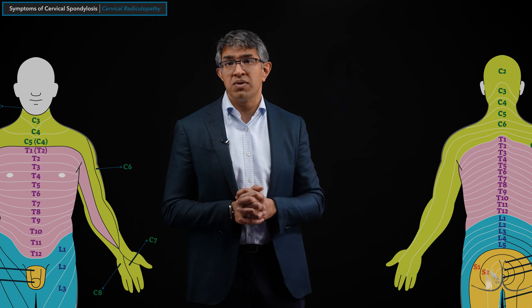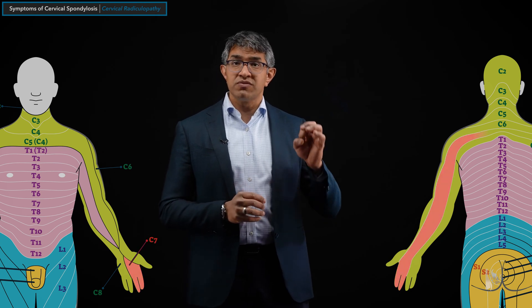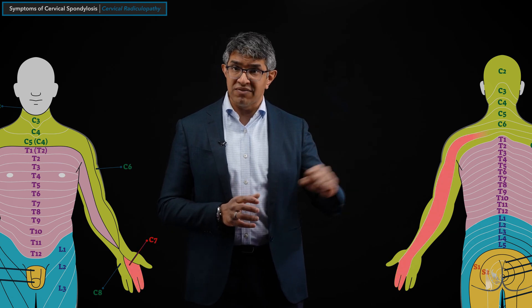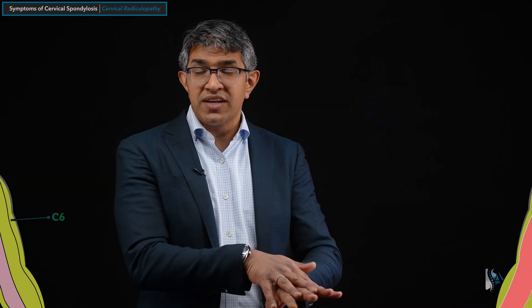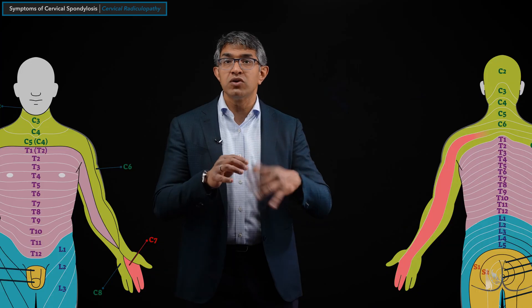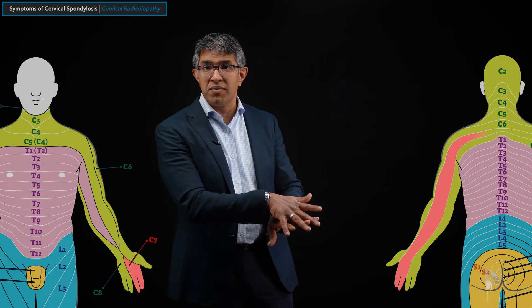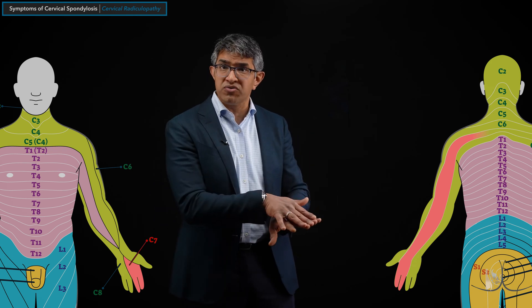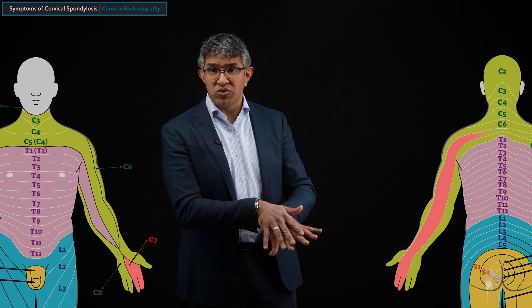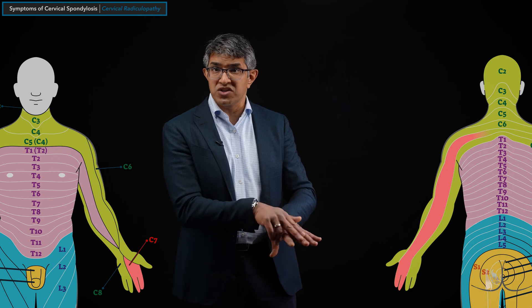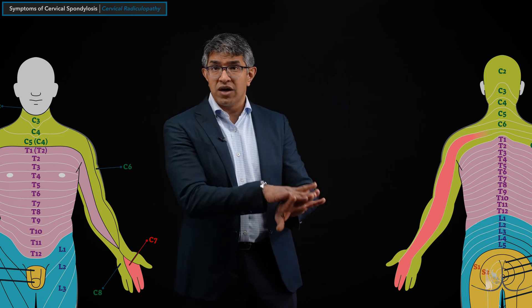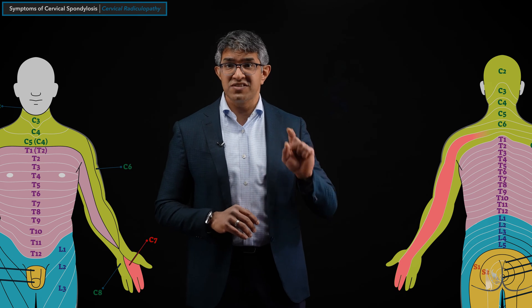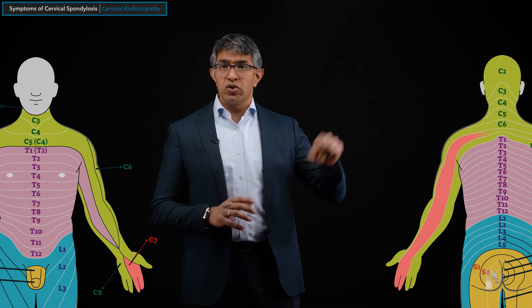A C7 radiculopathy, which is the next most common, typically comes from the C6-7 level. The typical distribution is down the back of the arm, back of the forearm, down to the back of the hand — classically the middle finger. There's variability, but as a general rule the middle finger is most commonly affected. The point is it typically travels down the back of the arm into the middle finger — that's a C7 distribution.